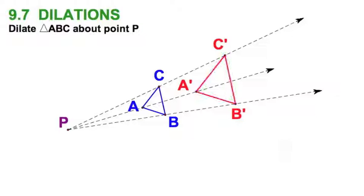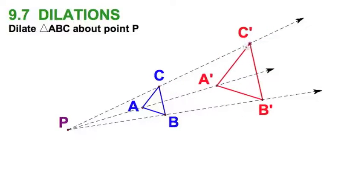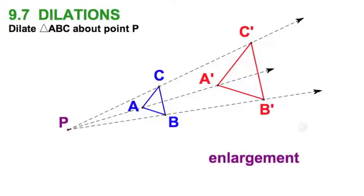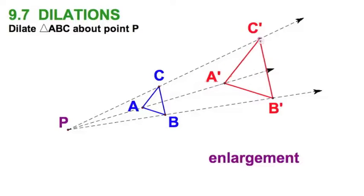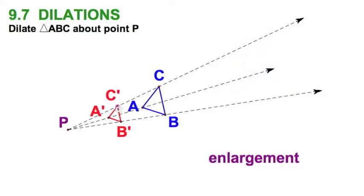Because in this case, the image would have to lie along those corresponding rays, each vertex, that is. Here I can see an enlargement where, of course, the image is greater than the preimage. And yes, I could go the other way. I could drag it down there and I would have a reduction.